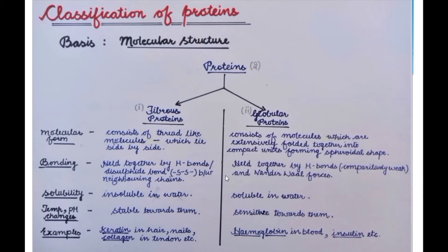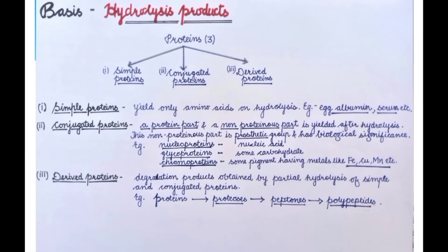The next classification is on the basis of hydrolysis products. On the basis of hydrolysis products, our proteins are divided into three categories. Hydrolysis means when you add water to proteins and break them down, what products do you get? The first type is simple proteins, the second are conjugated proteins, and the third are derived proteins.